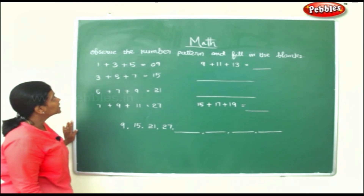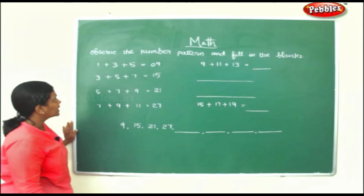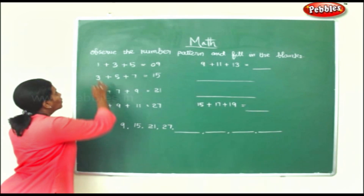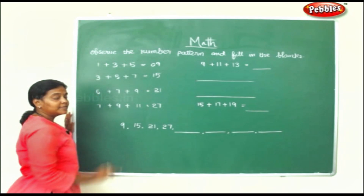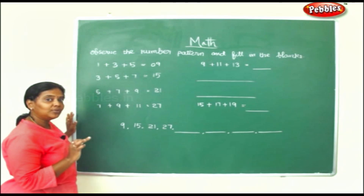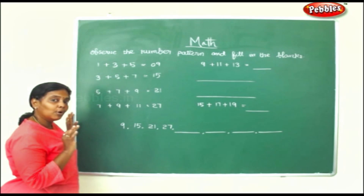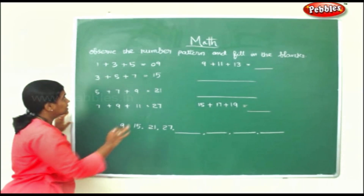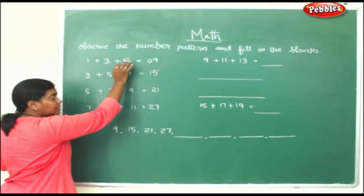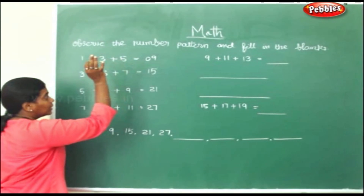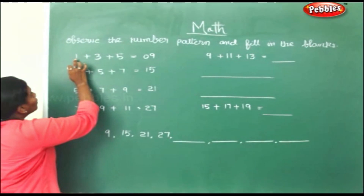Now let us observe the number pattern and fill in the blanks. We have 1, 3, 5. What do you observe from 1, 3 and 5? They are all odd numbers. So when you sum up the odd numbers you will get an odd number only.